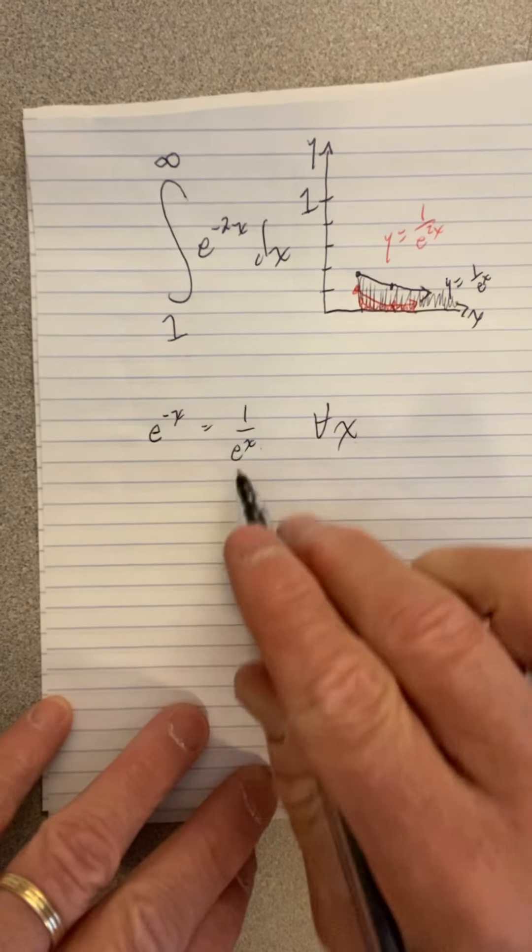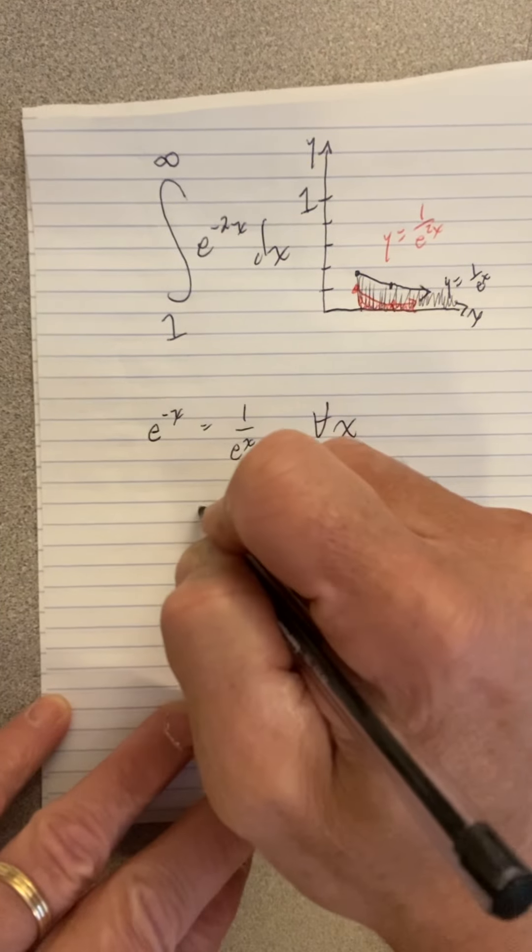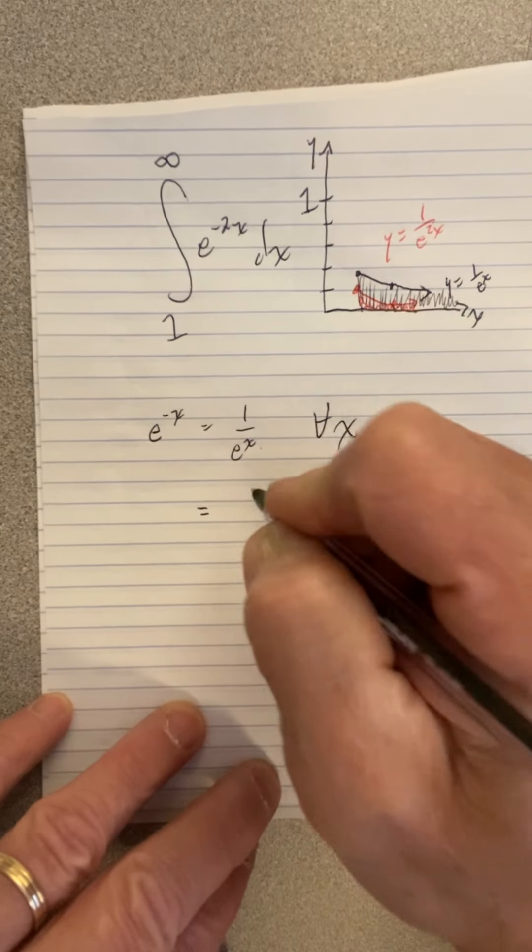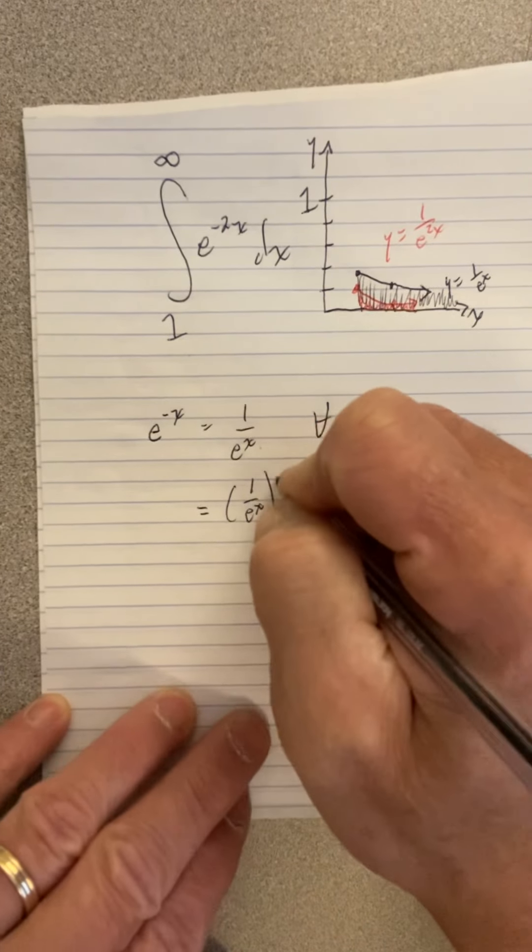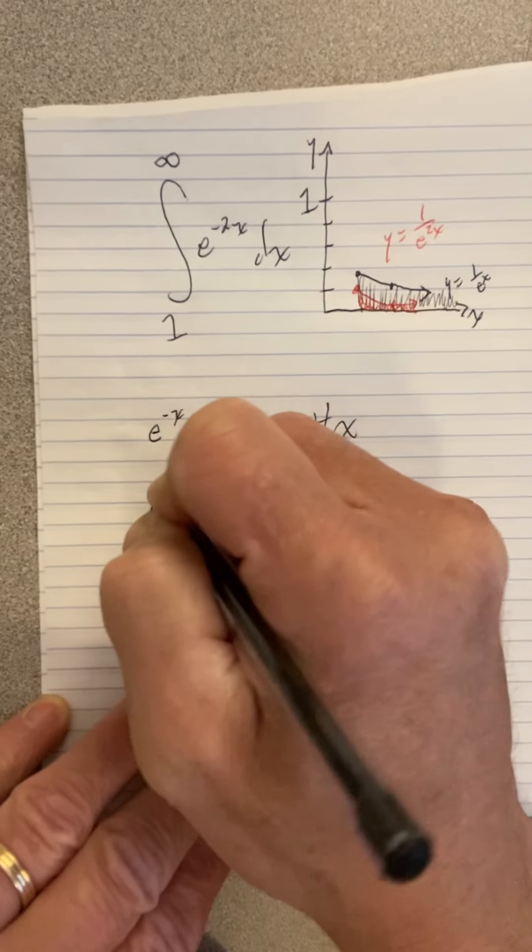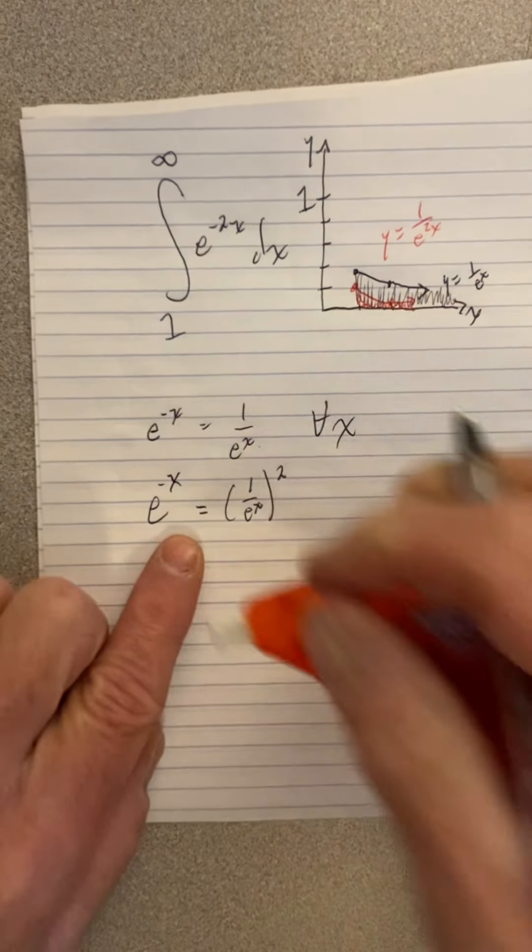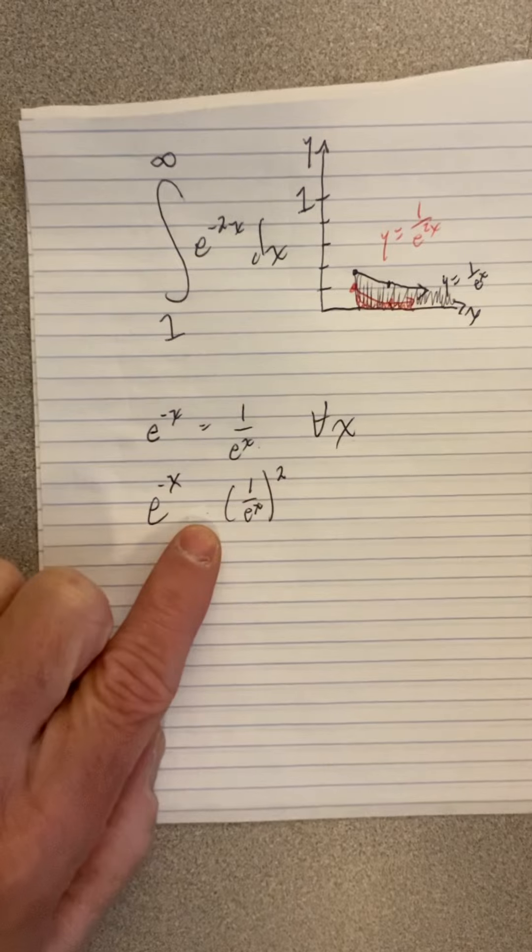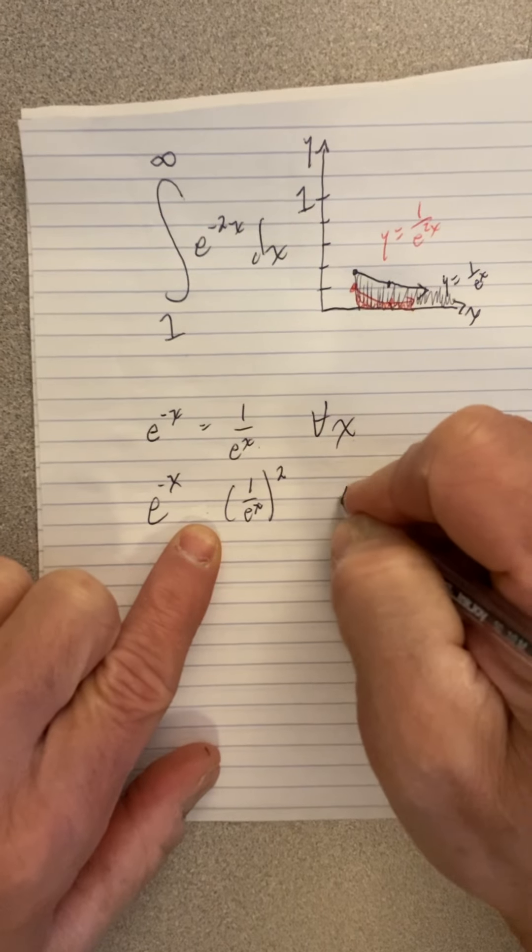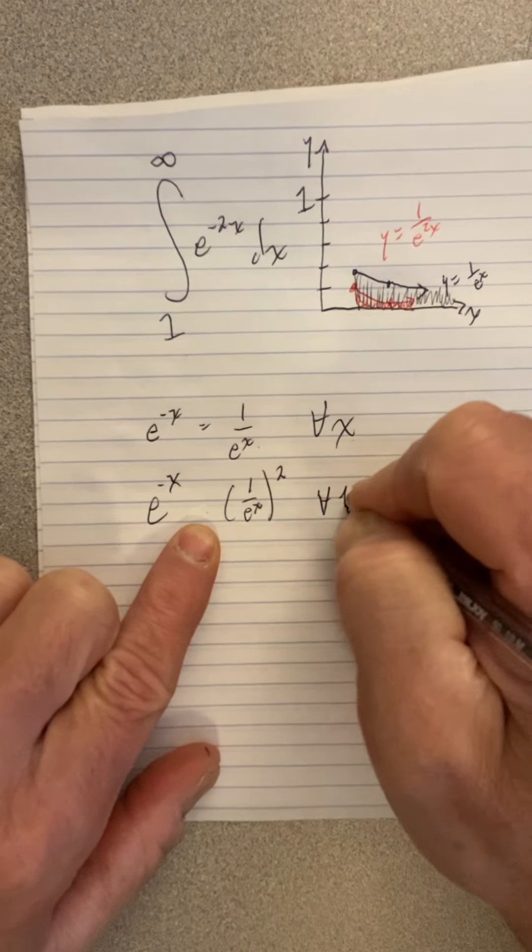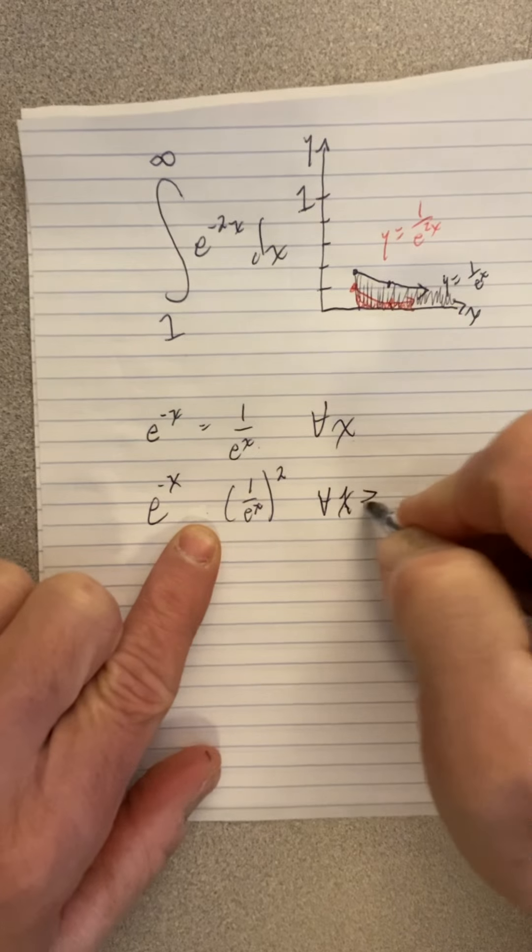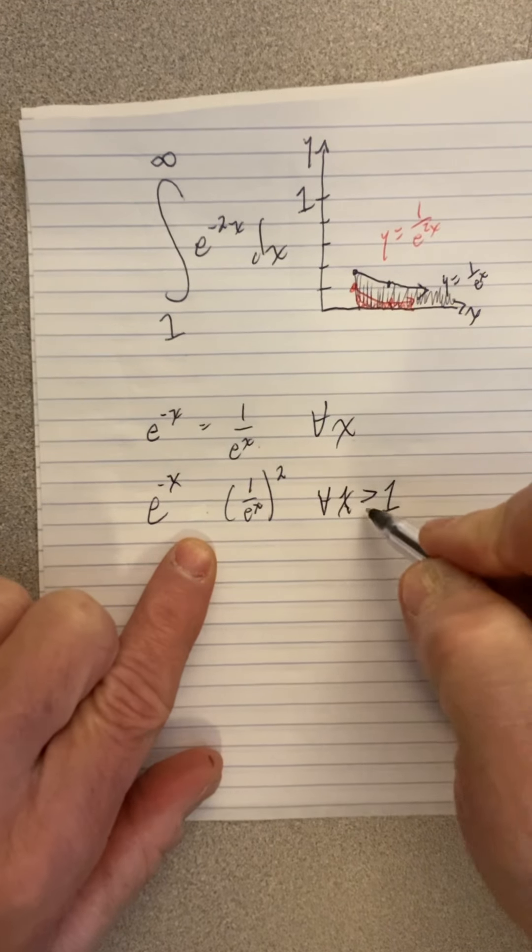e to the negative x is 1 over e to the x. Now, what if I square this side? Square this side, but not that side. What does that do to this equal mark? It won't be an equal mark anymore. Well, when for all x that are greater than 1, greater than or equal to 1, this is a proper fraction, right?